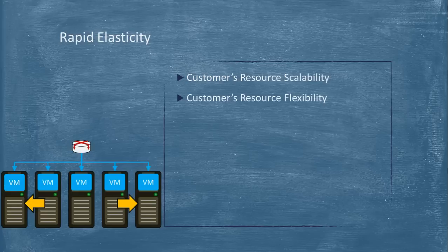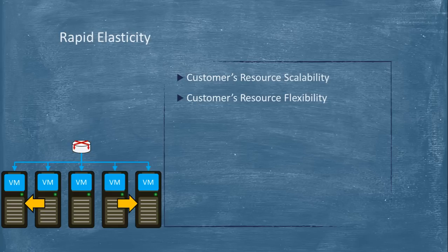Rapid elasticity is what I call the most attractive feature of cloud computing. As the word itself says, it is elastic in nature. That means when there is a certain load on the servers and it exceeds the threshold, it can increase its capacity automatically. Let me explain that with an example.